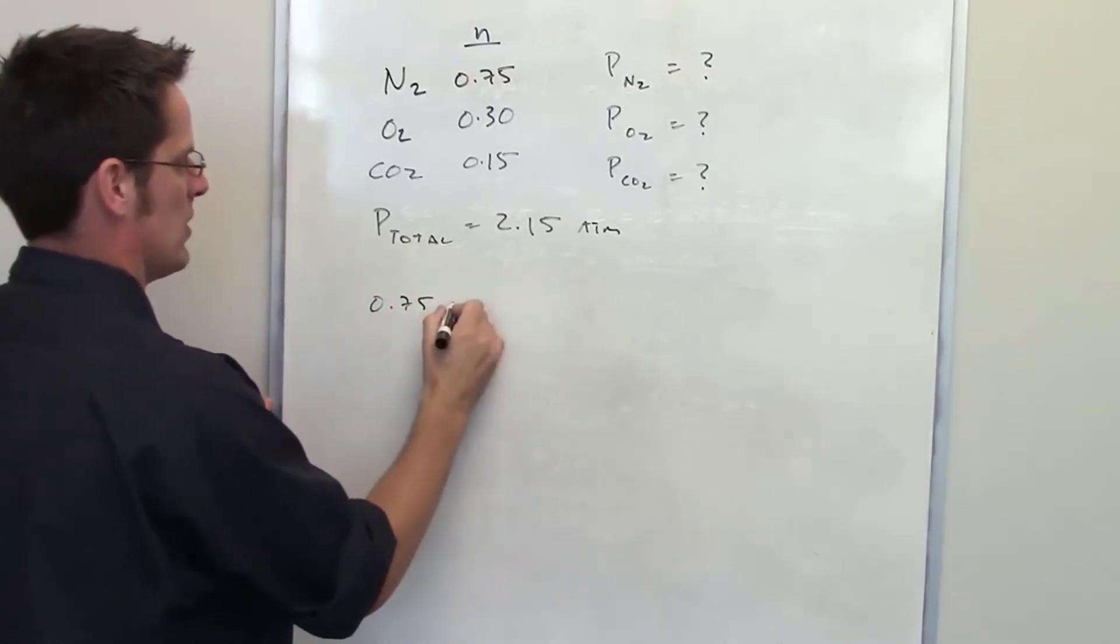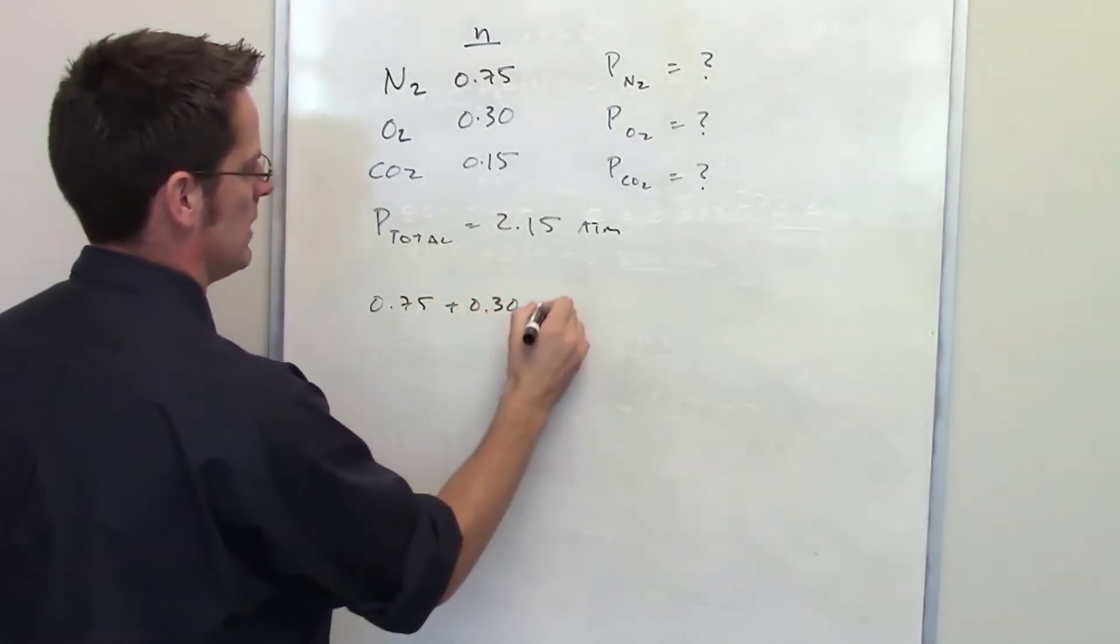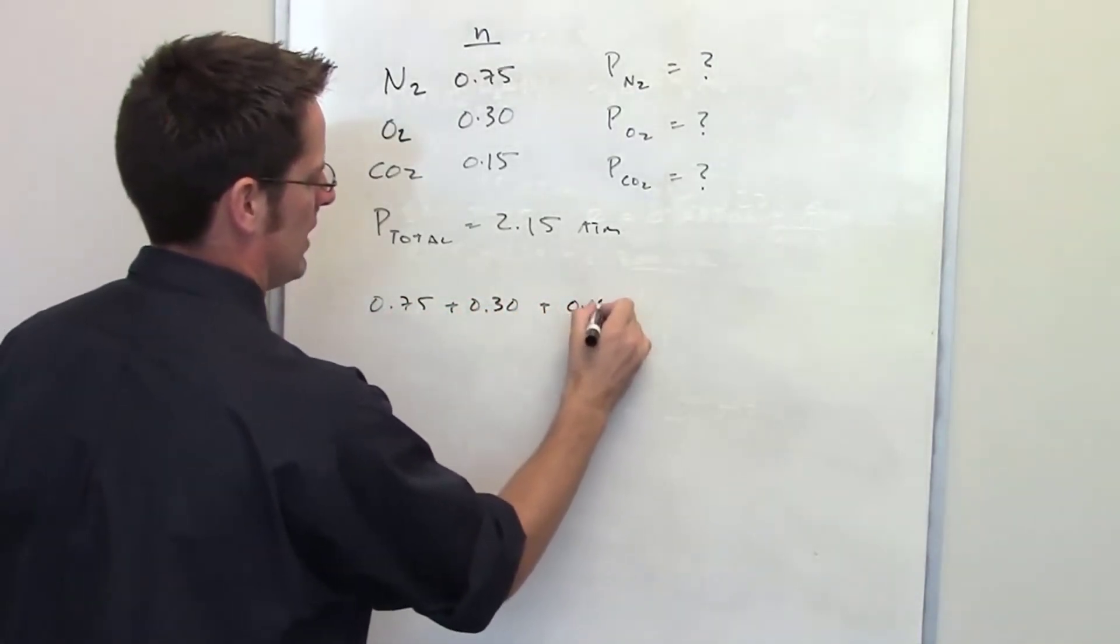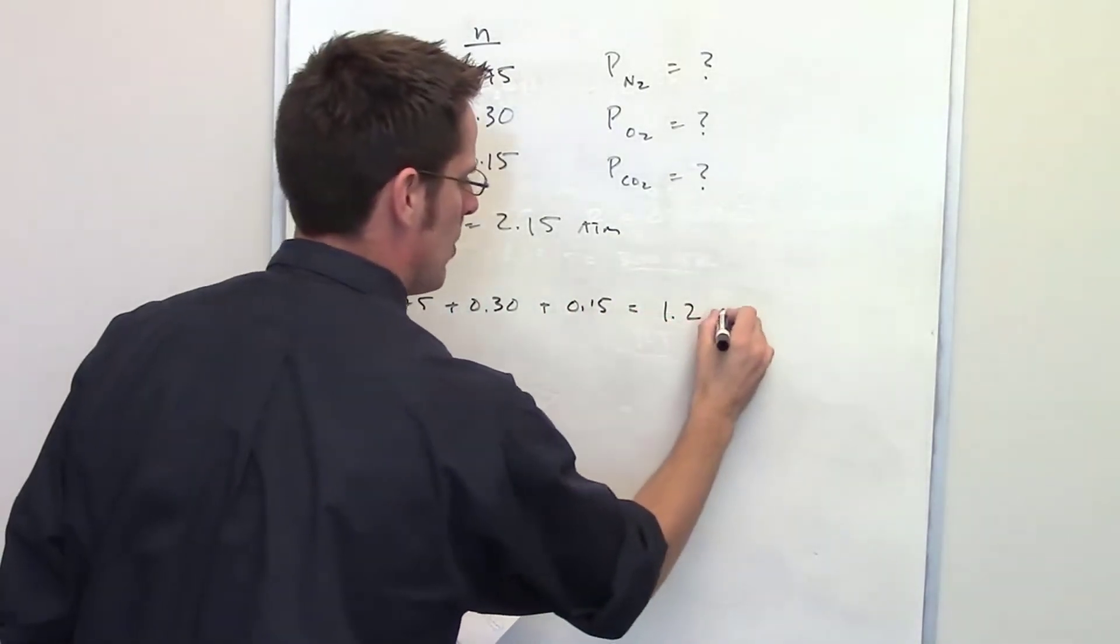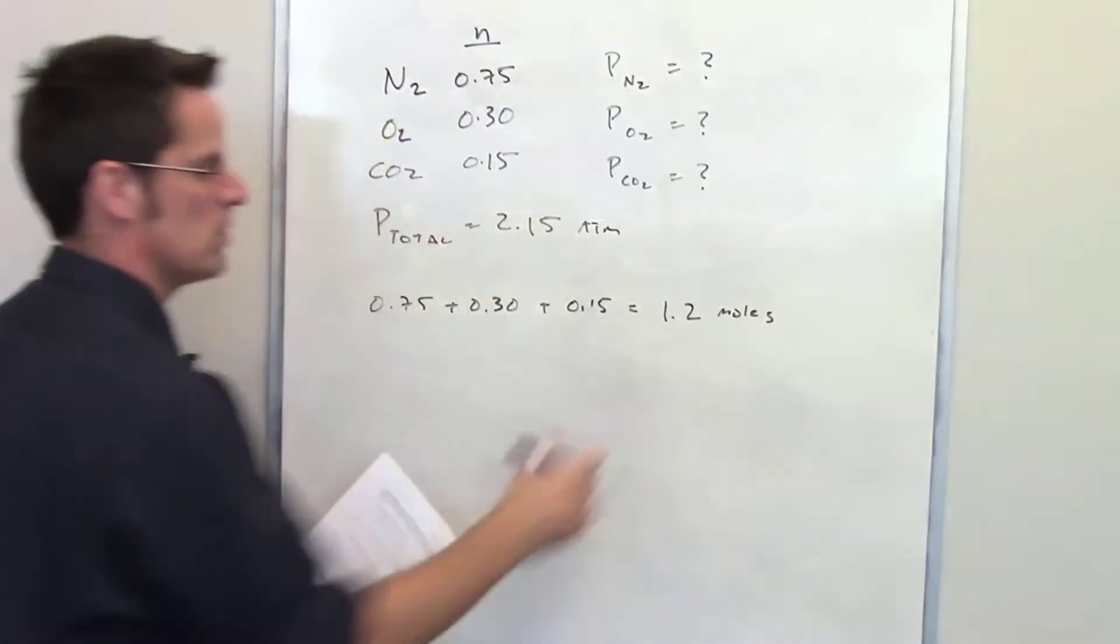0.75 for the nitrogen added together with 0.3 for the oxygen and 0.15 for the CO2. When I add all of those together, I determine that the total number of moles of all gases combined is 1.2.